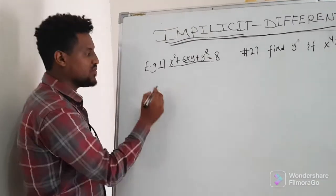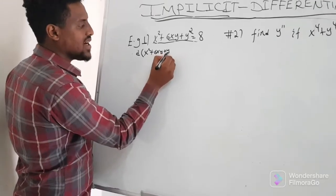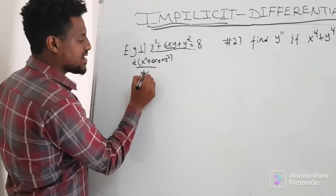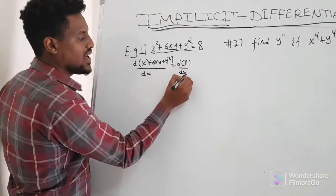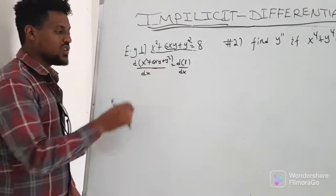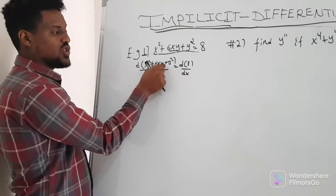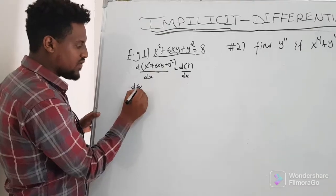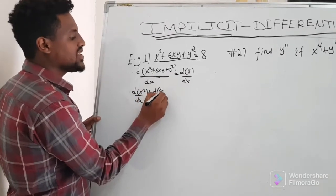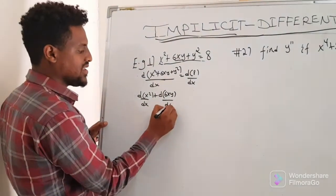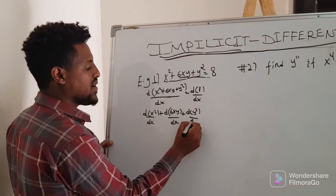This is the derivative of x squared plus 6xy plus y squared, by dx. This is set equal to the derivative of 8 by dx. We will see that: derivative of x squared by dx, plus derivative of 6xy by dx, plus derivative of y squared by dx.